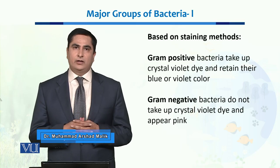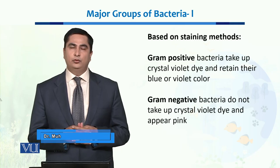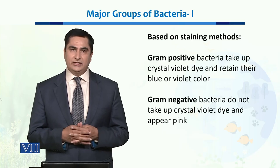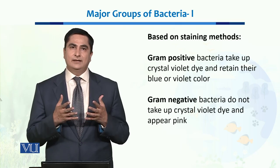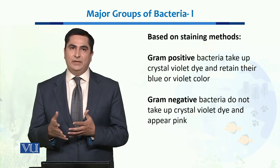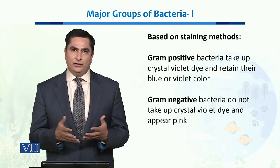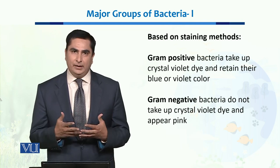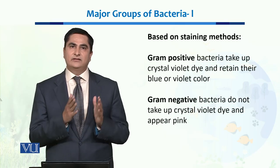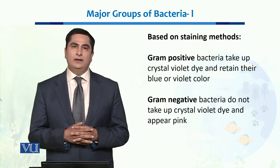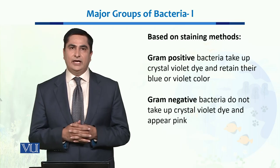When we talk about staining microorganisms to classify them, Hans Gram was a scientist who for the first time stained bacteria and classified them into two major groups: gram positive and gram negative. Because of that scientist, we have named this method Gram staining. Using this method, we can broadly classify bacteria into two groups.